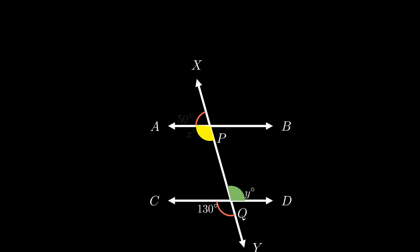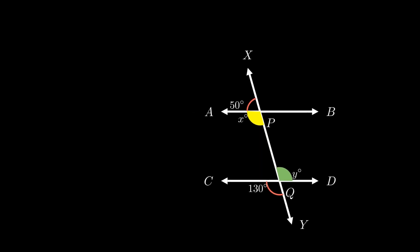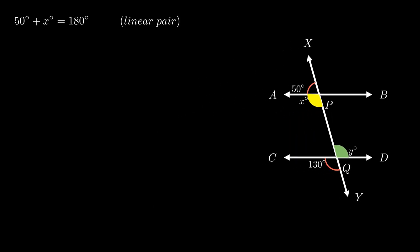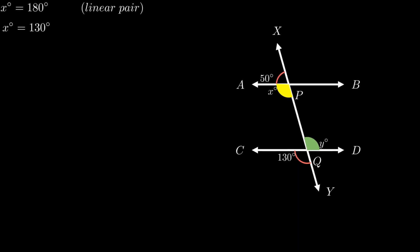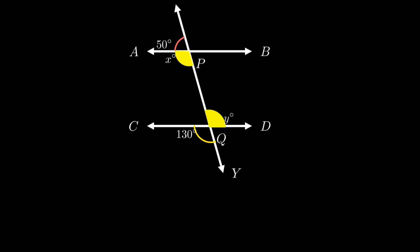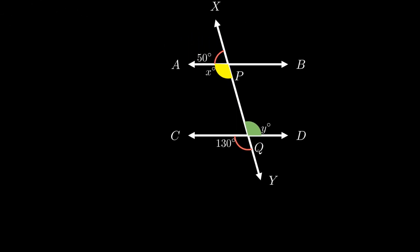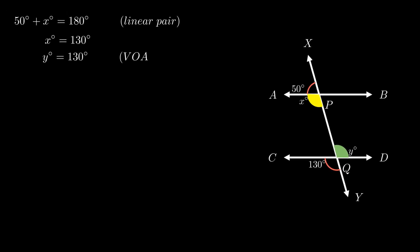Since transversal XY is a line, 50 plus X equals 180 degrees as it forms a linear pair. On transposing, X equals 180 minus 50, which equals 130 degrees. Since line CD and transversal XY are intersecting lines, Y equals 130 degrees as they are vertically opposite angles.